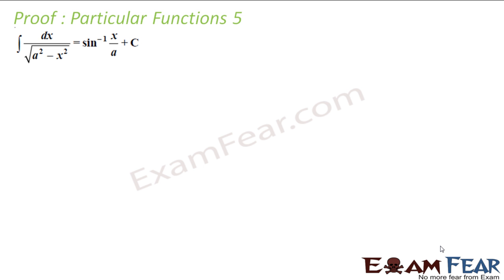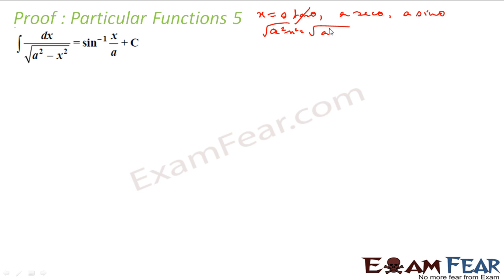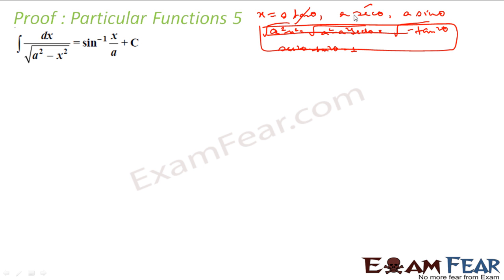Now let us try this: root of a²–x². Here again we can try x equal to a·tan θ, a·sec θ, or a·sin θ. Tan θ is not possible because it is minus. If we try sec θ, root of a²–x² becomes root of a²–a²·sec²θ, and since sec²θ – tan²θ = 1, we get root of –tan²θ, which is not valid. So I will not take sec θ.